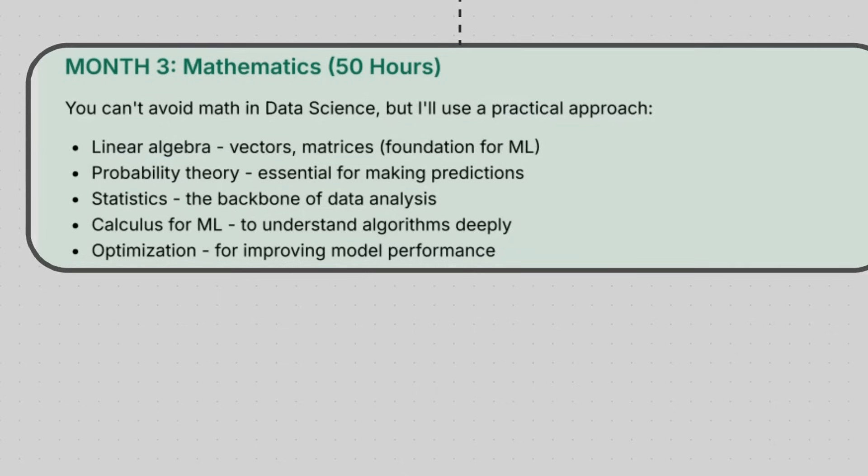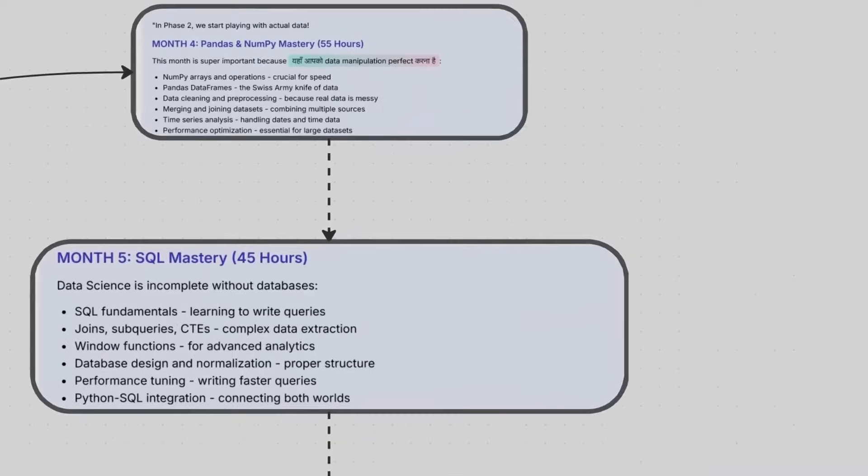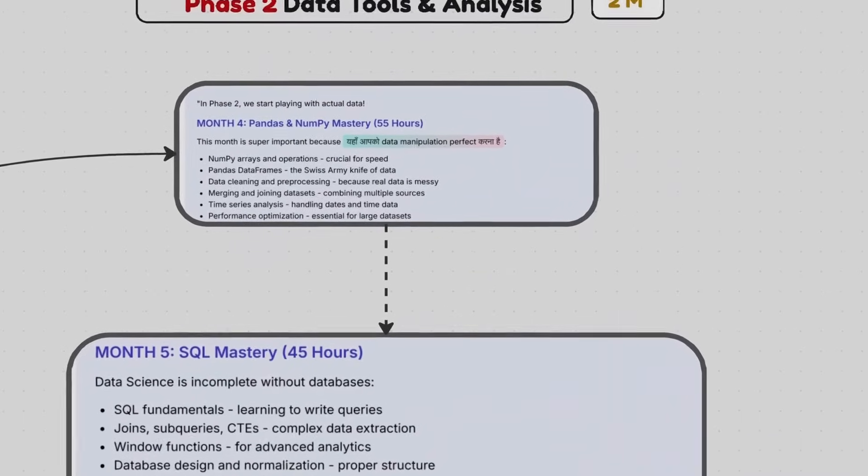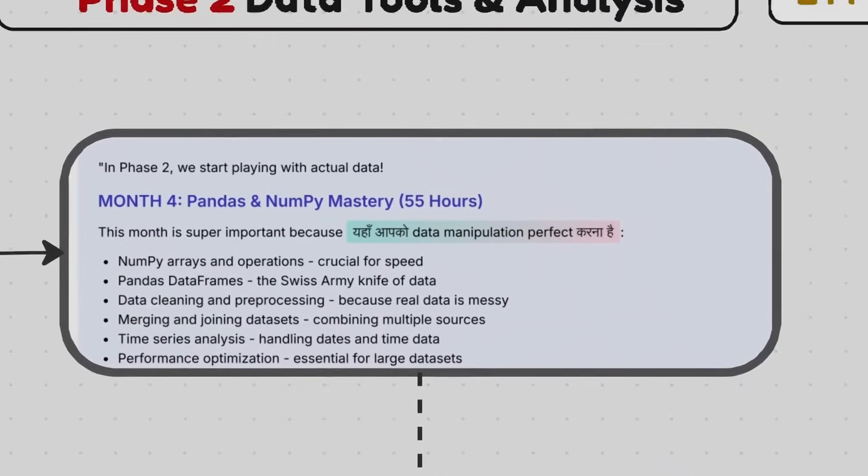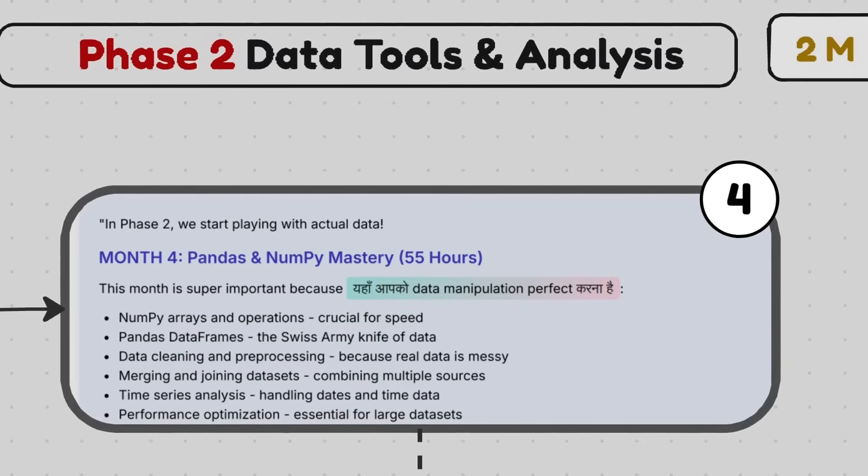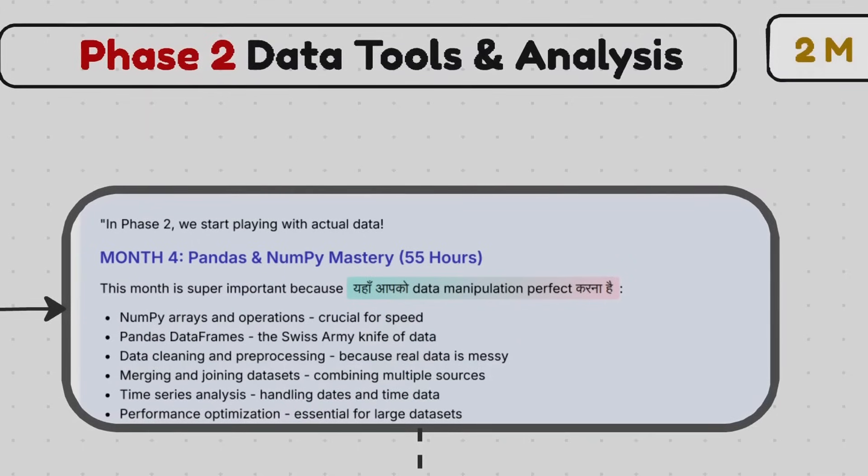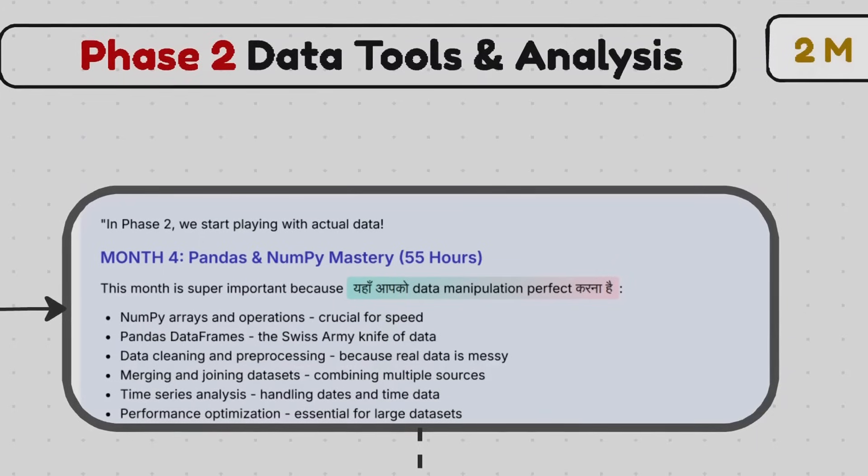Moving to the second phase of our curriculum, the second phase is all about data tools and analysis. We will talk in-depth concepts of pandas and NumPy. We will talk about NumPy arrays and operations, pandas DataFrames which is also known as the Swiss Army knife of data. Thereafter, we will talk about data cleaning and preprocessing, merging and joining data sets, time series analysis, and performance optimization. So these are the step-by-step alignment that I have done while talking about pandas and NumPy in very depth.